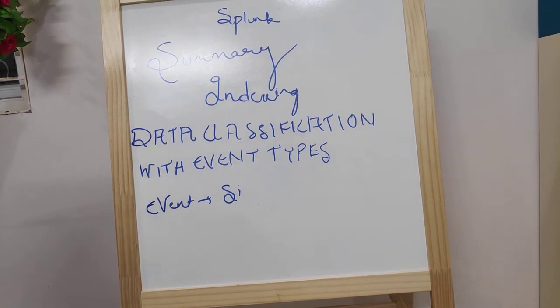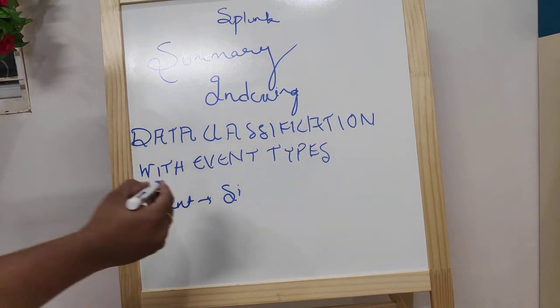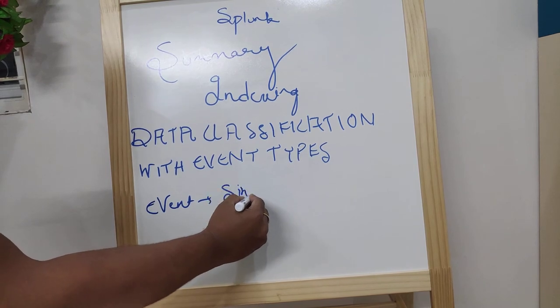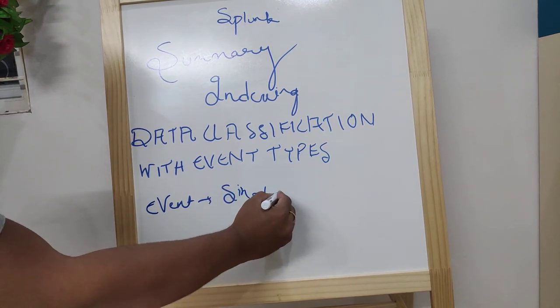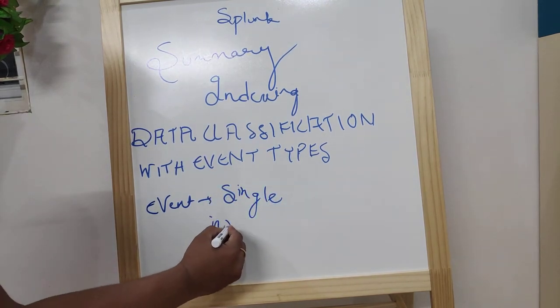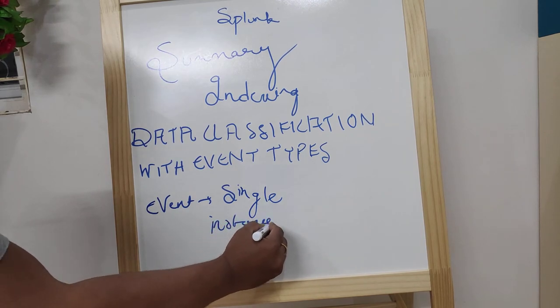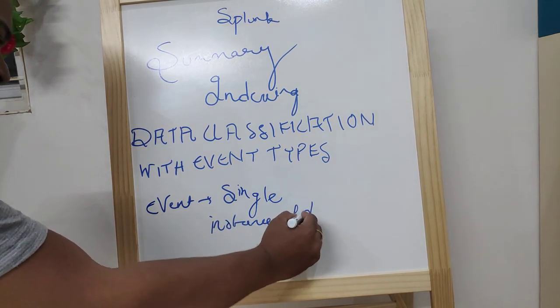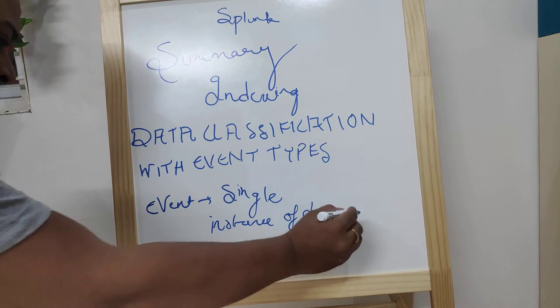So event an array single instance of data. Just a single instance of data. And event type an array group of classification of events.